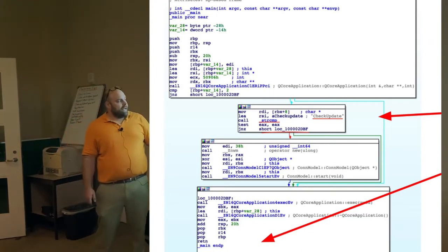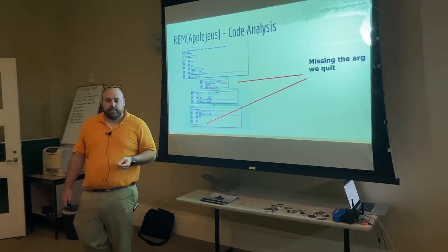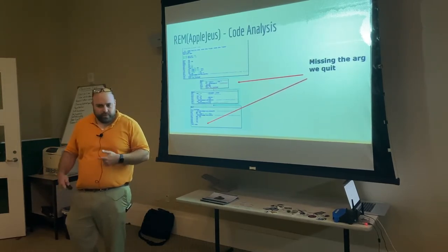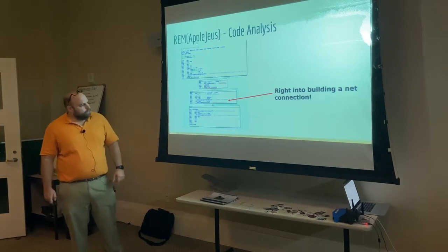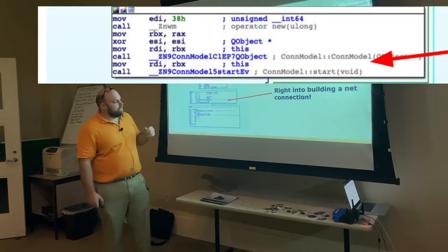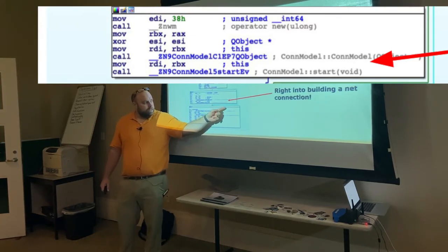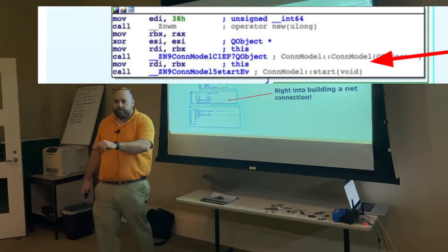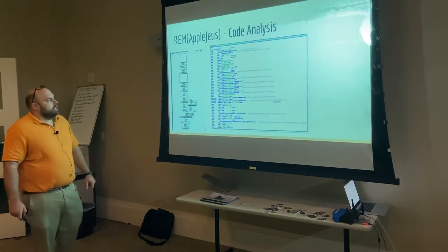The only thing this screenshot shows is that if this check does not check out — specifically, did you pass the argument 'check update' — the malcode immediately closes. That's really important: in order to actually get this code executing, you have to pass the 'check update' argument. Earlier in the process I saw the check-update argument being passed but chose to forego it to see what happened. Surprise, surprise — the malcode would not run. Immediately after you pass the argument check-update, we start going through the process of building what our network communication is going to be.